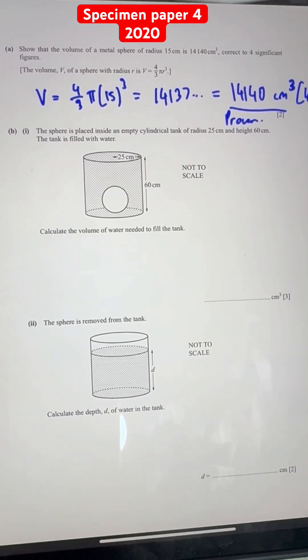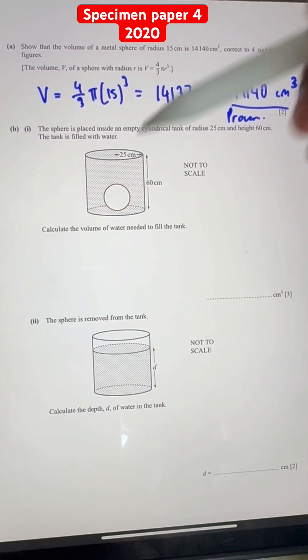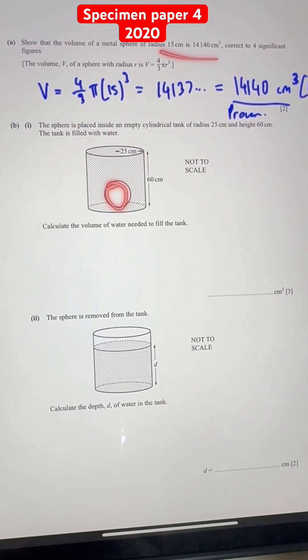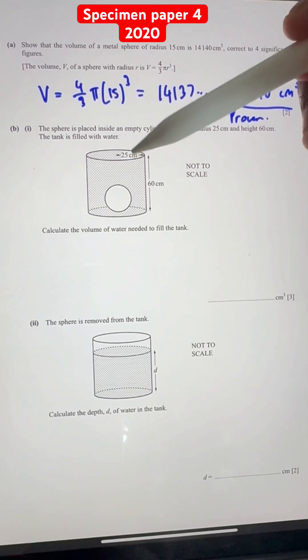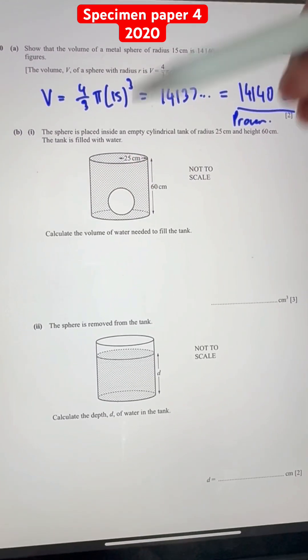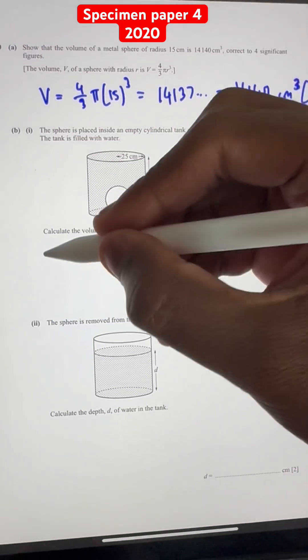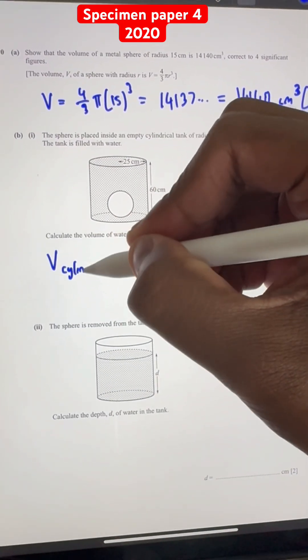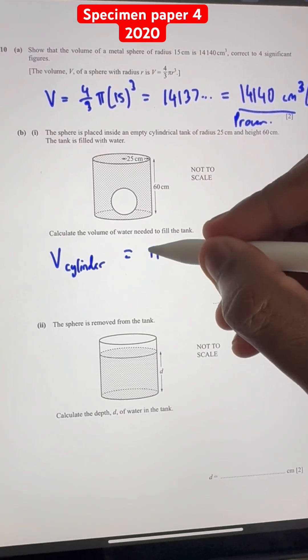Well, we have the volume which is approximately 14137. The volume of the sphere is the same sphere over here that's in the first question. And now we need to find the volume of the tank and then subtract the tank minus the sphere. So the volume of the cylinder is equal to π r² h. This is our formula.